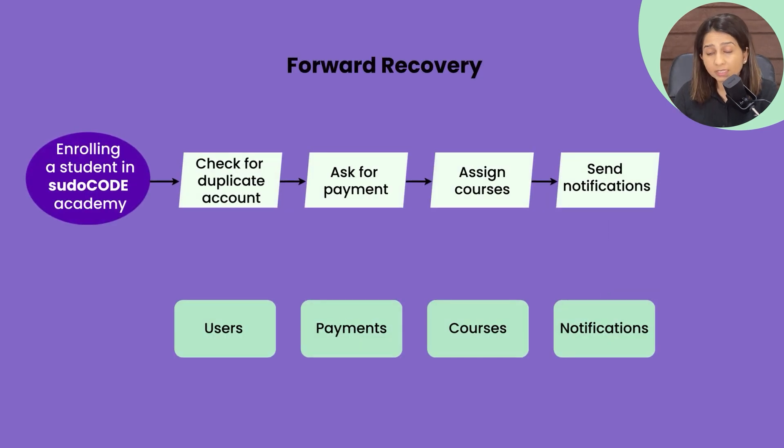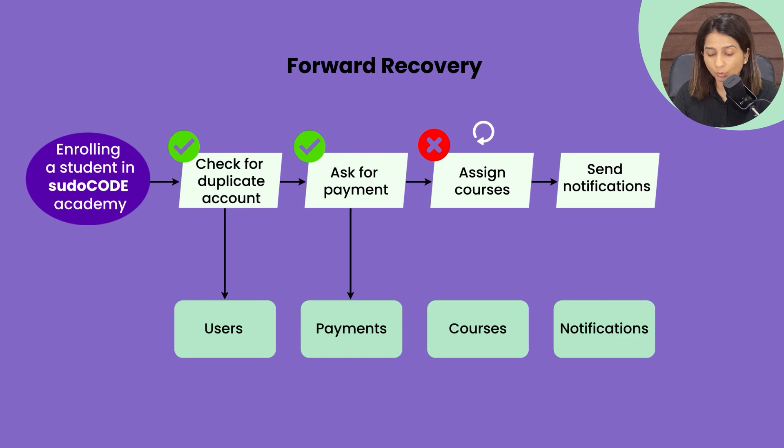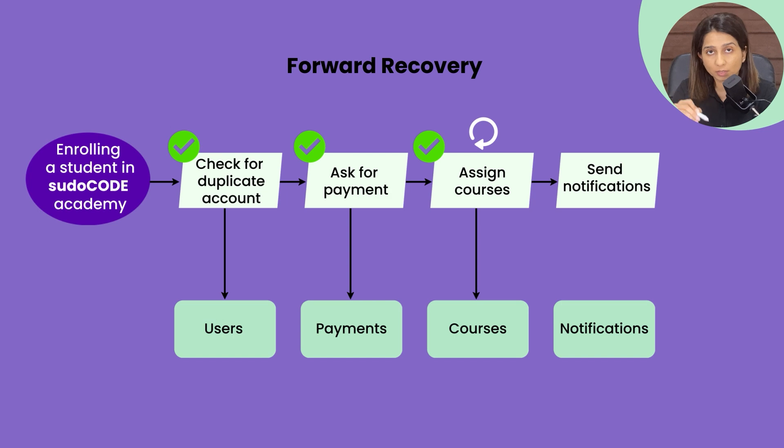Another way of handling it is to retry — if your payment was successful but a subsequent step failed, you try that step again and continue the transaction. This is called forward recovery: you try to still move forward in the direction of the whole transaction by retrying the failed step. It is completely normal to go with a mixture of both approaches — forward recovery for some steps and backward recovery for others.